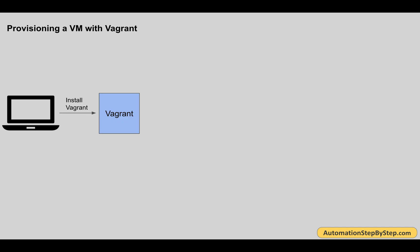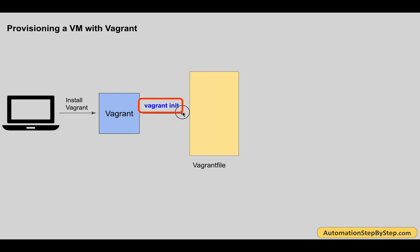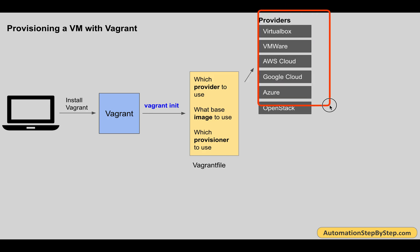When we use Vagrant to provision a virtual machine, we install Vagrant on our host system, and when we run the command 'vagrant init', it will generate a Vagrantfile. In the Vagrantfile, we can add the virtual machine providers like VirtualBox, VMware, etc. We also provide the image name that will be used to set up the virtual machine, like CentOS, Ubuntu, etc. We then give the details of the provisioners — we can use configuration management tools like Ansible, Puppet, Chef, or our own scripts.